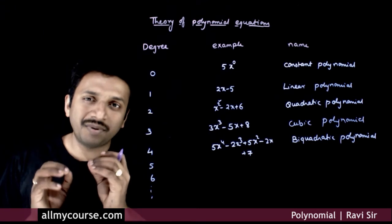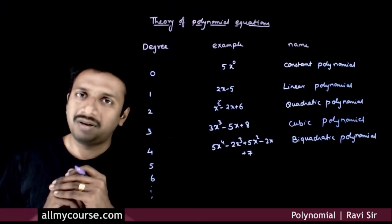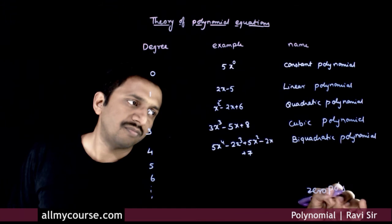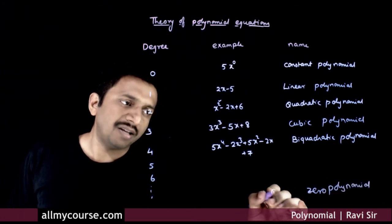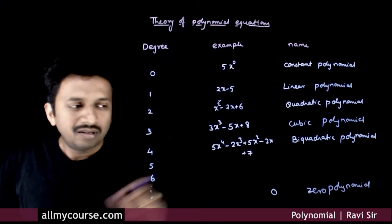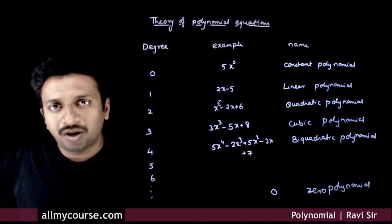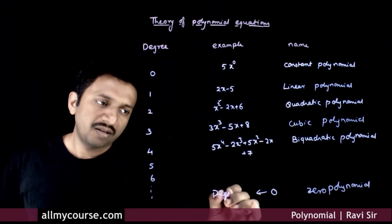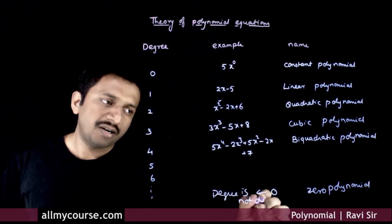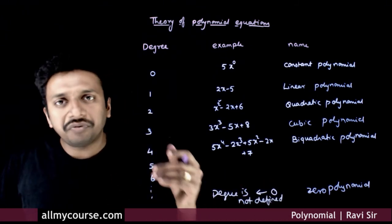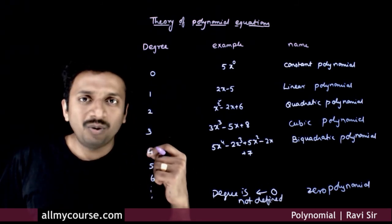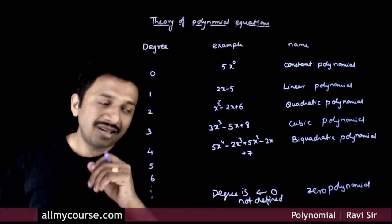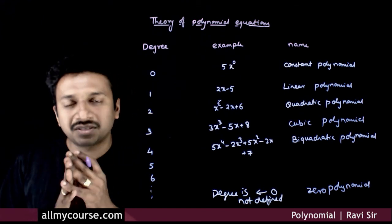There is a very special polynomial called the zero polynomial — it is not a zero degree polynomial. The zero polynomial is simply the constant zero. A constant zero is called the zero polynomial and for it, the degree is not defined. Other than zero, if you have any other constant, it becomes a constant polynomial of degree zero. But if you have the number zero, it is called a zero polynomial and the degree is not defined.